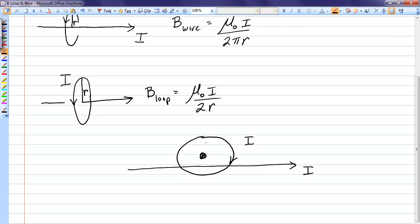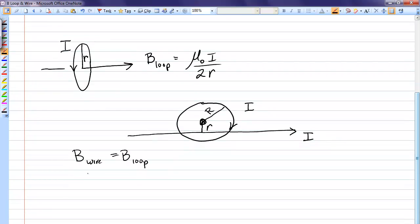So in order not to get confused with these little R's, I'm going to call the radius of the loop capital R, and the distance from the center out to this wire small r. So it must be that the magnetic field of the wire magnitude exactly equals the magnetic field in the loop magnitude, because they point in opposite directions, they'll then cancel.